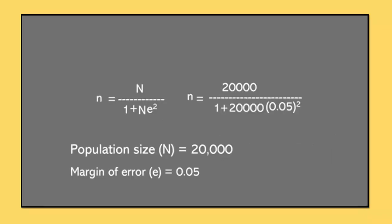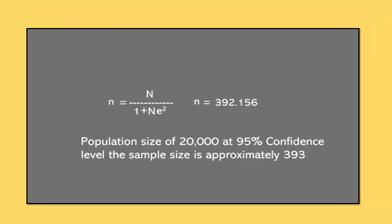Now we will put all this value into the Yamane formula. n equals 20,000 divided by 1 plus 20,000 times in bracket 0.05 square. Now after calculation, our sample size is equal to 392.156.